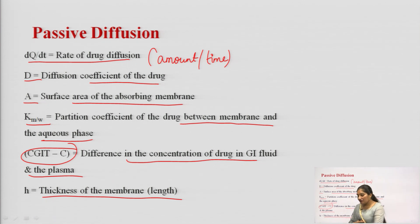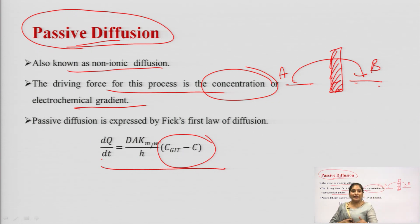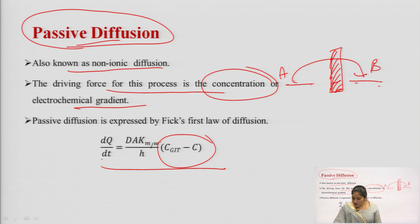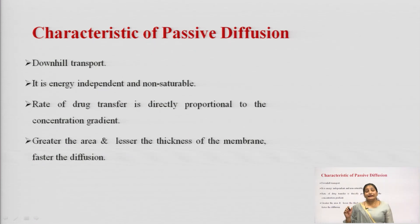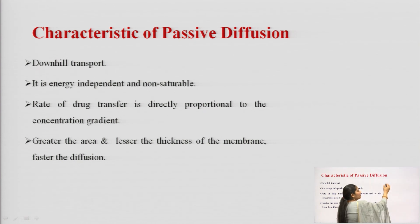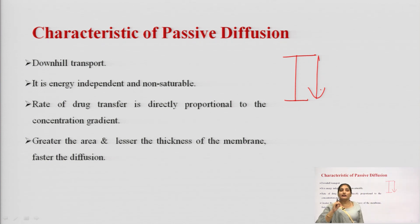Based on the equation dq/dt = D·A·Km/w / h × concentration gradient, we can identify certain characteristics of passive diffusion. The first characteristic is that it is a downhill transport — meaning drug movement takes place from higher concentration to lower concentration, that is why it is called downhill transport.